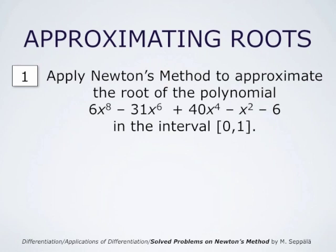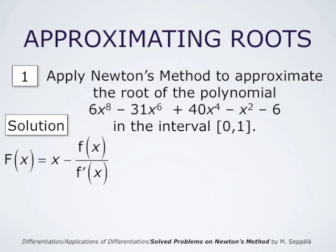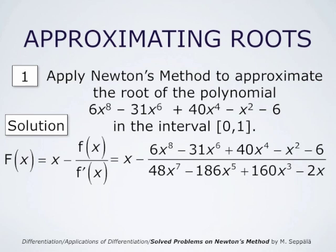Our task is to apply Newton's method to approximate the root of the polynomial 6x^8 minus 31x^6 plus 40x^4 minus x^2 minus 6 in the interval from 0 to 1. We first form the function capital F starting with the lowercase f, which is this polynomial. Capital F at x is x minus f(x) divided by f'(x). Applied to this polynomial, we get x minus the fraction (6x^8 minus 31x^6 plus 40x^4 minus x^2 minus 6) divided by (48x^7 minus 186x^5 plus 160x^3 minus 2x).